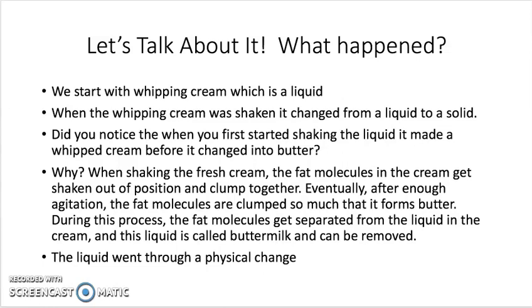Did you notice that when you first started shaking the liquid, it made a whipped cream before it changed into butter? Why? When shaking the fresh cream, the fat molecules in the cream get shaken out of position and clump together. Eventually, after enough agitation, the fat molecules are clumped so much that it forms butter. During this process, the fat molecules get separated from the liquid in the cream, and this liquid is called buttermilk and can be removed.